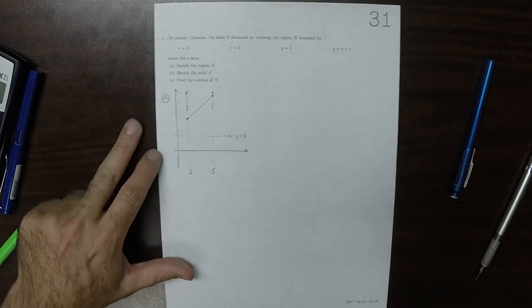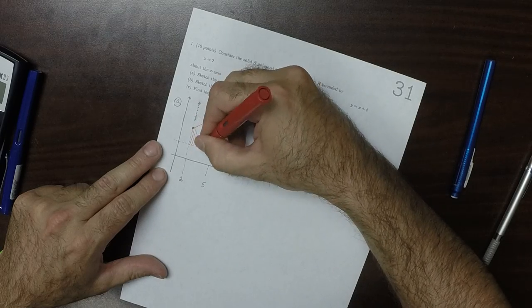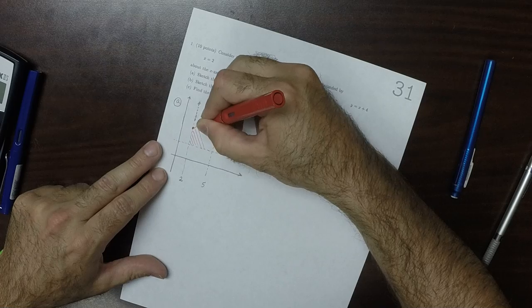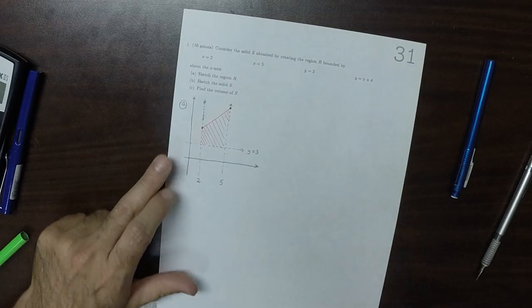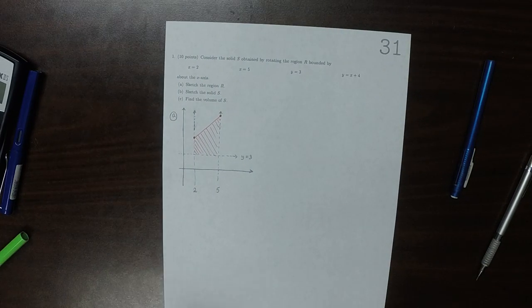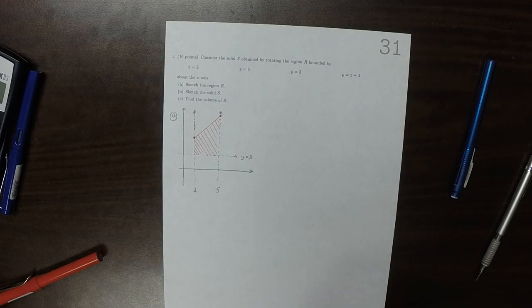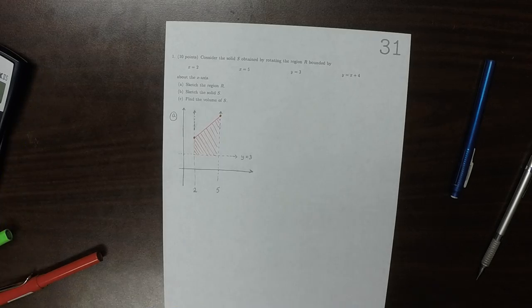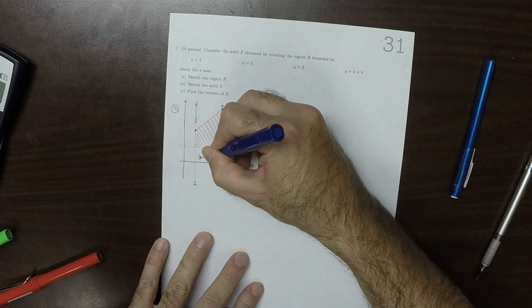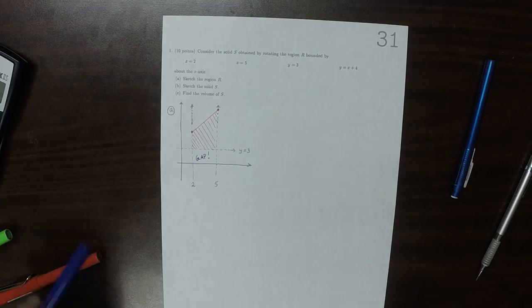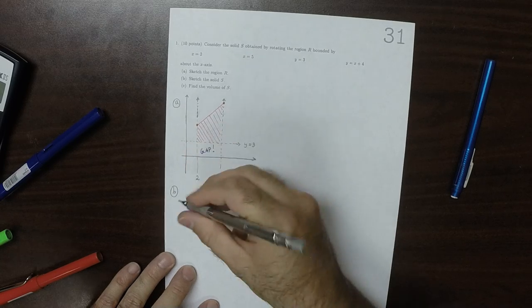So the region that's being rotated is this one. Now we're going to rotate this around the x-axis. The way this is different from the previous written homework exercises is that this is a gap. So we're going to rotate it around this axis.